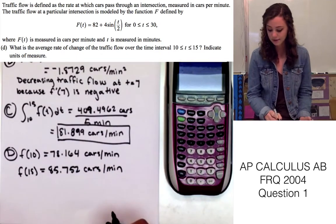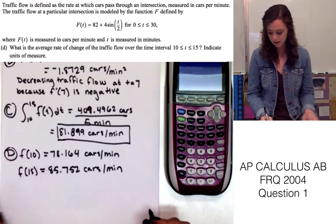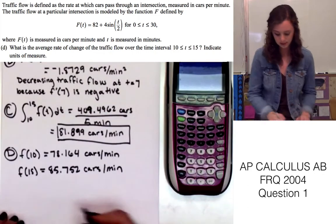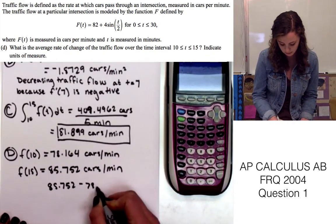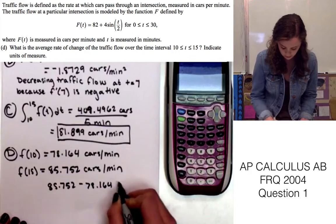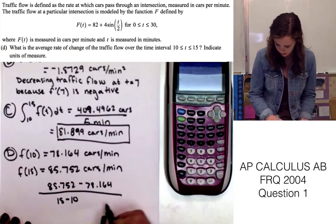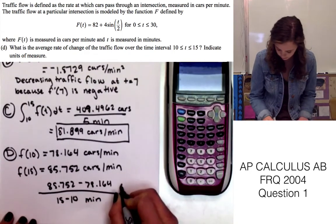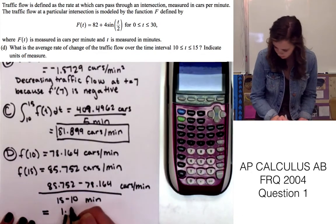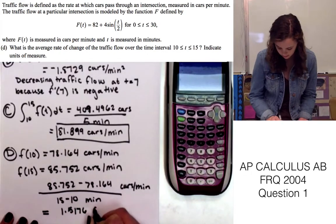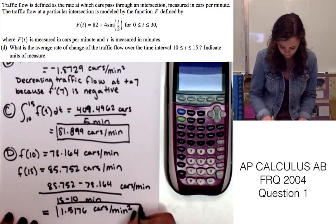Since we're finding the average rate of change, we need to find the difference between f(15) and f(10), and divide that by 15 minus 10. So we're going to do 85.752 minus 78.164, and these are both in cars per minute, over 15 minus 10. And this is in minutes. And I'll put the label here, cars per minute. And that is going to give us 1.5176 cars per minute squared, which is our final answer.